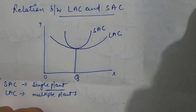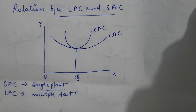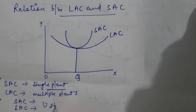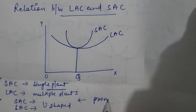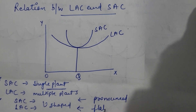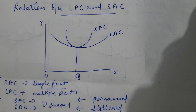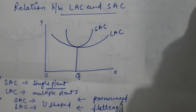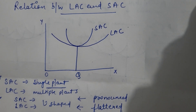The second relationship is that both short run average cost and long run average cost are U-shaped. But the short run cost curve is a more pronounced curve, whereas the long run average cost curve is relatively flattened.